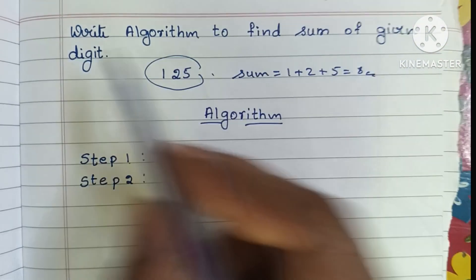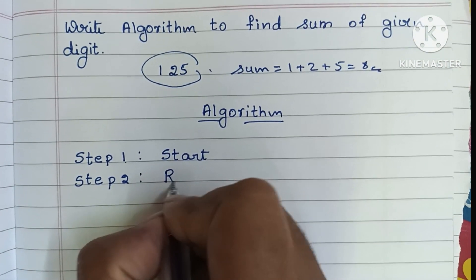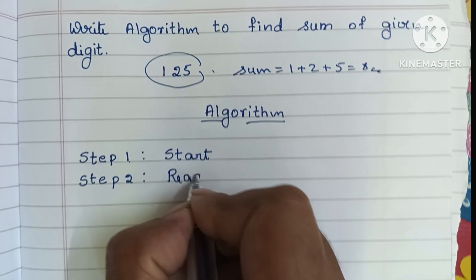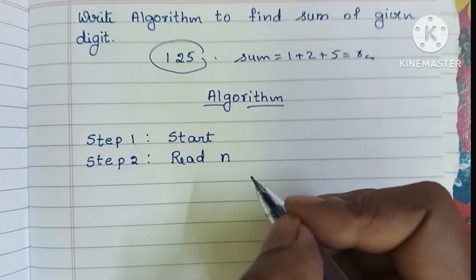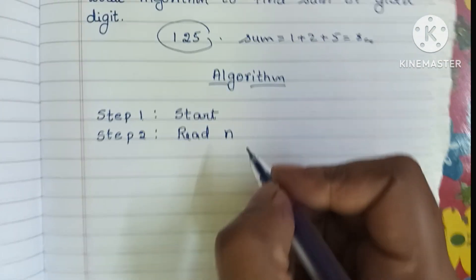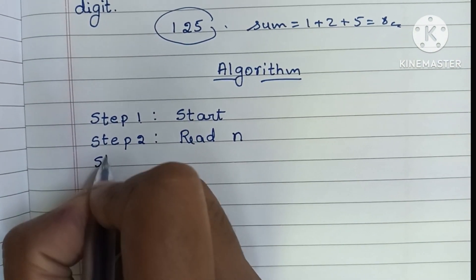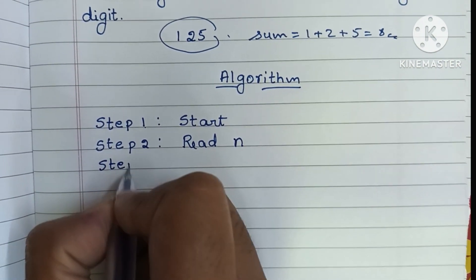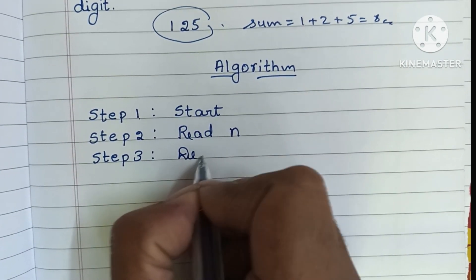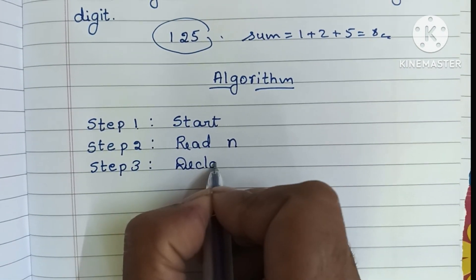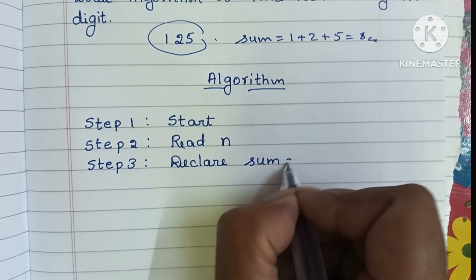In step 2, we have to read the input value. Since we have to find the sum of digits, we read a digit number N, where N represents the given number. In step 3, we declare sum equal to 0 — initially sum is equal to 0.